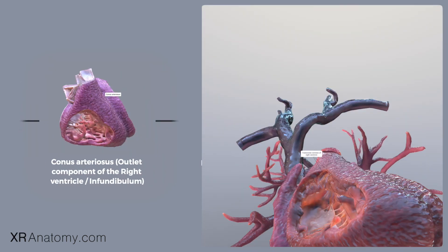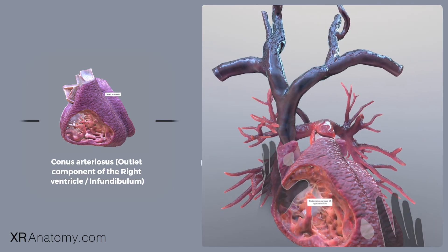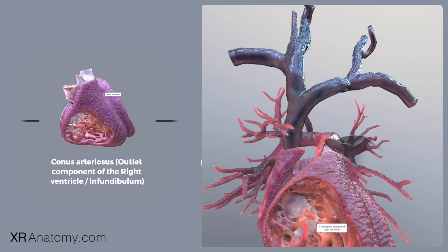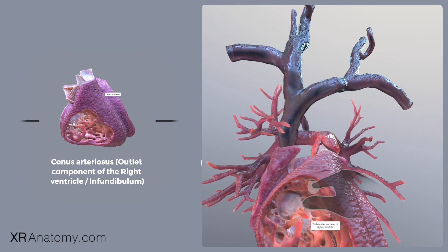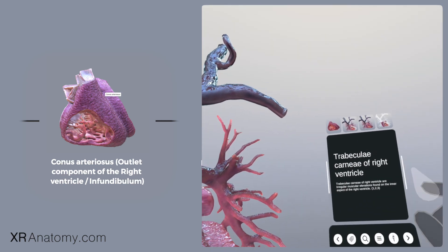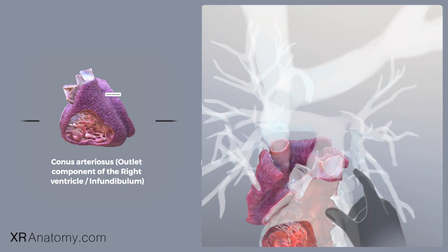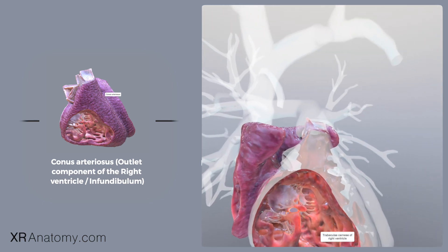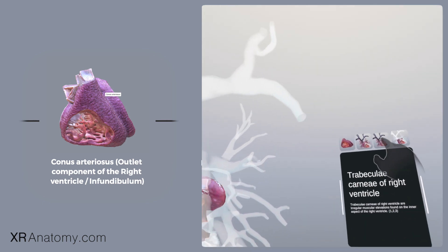Above the supraventricular crest within the heart's architecture lies the outlet component, also known as conus arteriosus, or infundibulum. This conical pouch resides in the upper part of the right ventricle, playing a pivotal role in supporting the pulmonary valve. Serving as the outflow tract of the right ventricle, it guides blood flow outside the right ventricle.